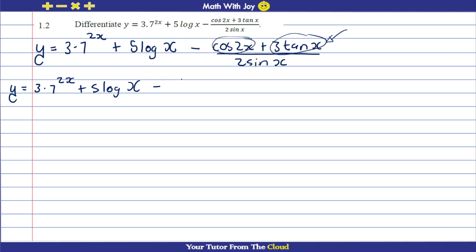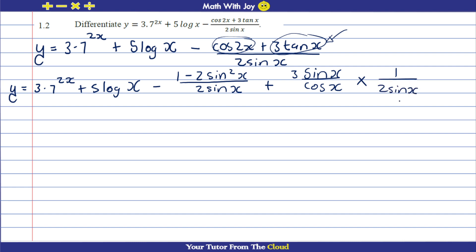I'm also going to change cos(2x) using the double angle identity to (1 − 2sin²x), and divide this by 2·sin(x). Over here we'll have 3·sin(x) over cos(x), divided by sin(x), which I'll change into multiplication by one over 2·sin(x). Now let's cancel: sin cancels with sin, one of the sin² cancels with sin, and we also bring the half along.